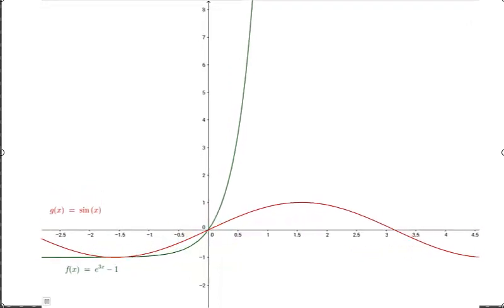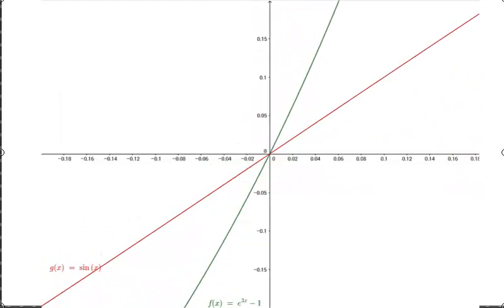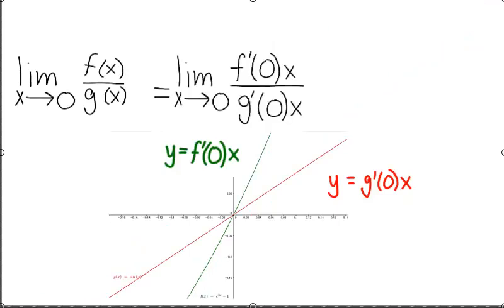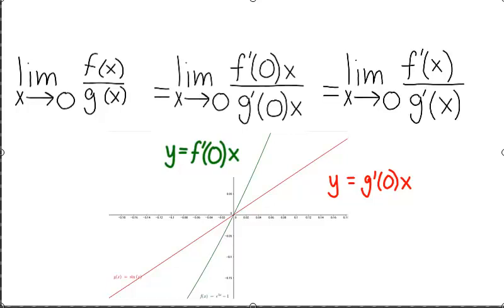If we zoom in enough, we will find a scale where f of x and g of x look very much like their tangent lines. Therefore, let's assume that we can replace f of x and g of x with the equations of their tangent lines in our limit expression.